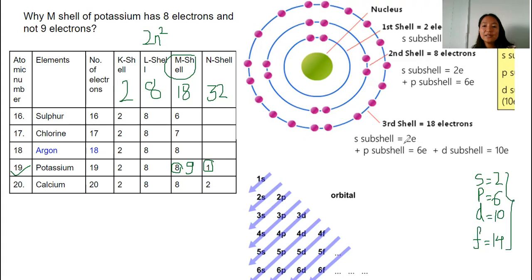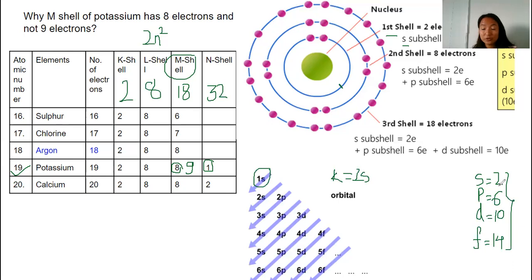Now let us see how many sub-shells are present in each shell. The K-shell, the first shell, has just one sub-shell: 1S. Since the S sub-shell can hold just two electrons, K-shell with its one sub-shell can hold just two electrons.